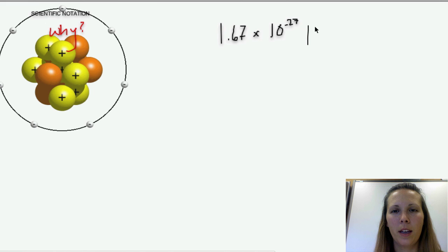Another example would be the mass of a proton, which is 1.67 times 10 to the negative 27 kilograms. So that's a very, very small number because this is negative.